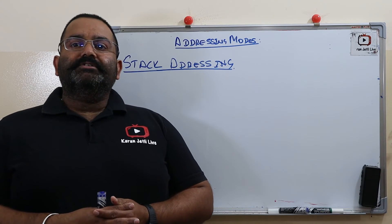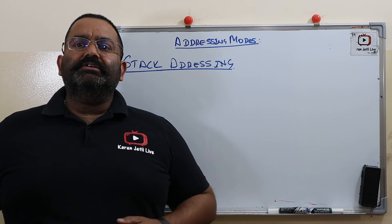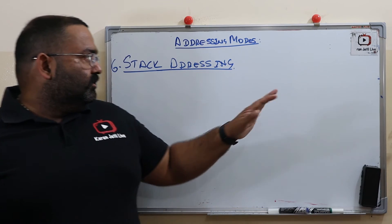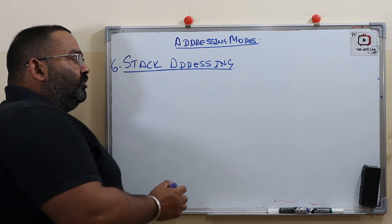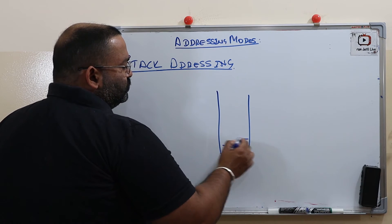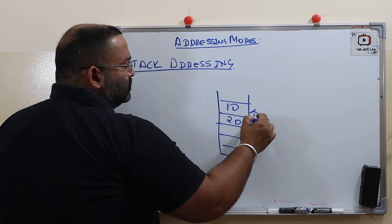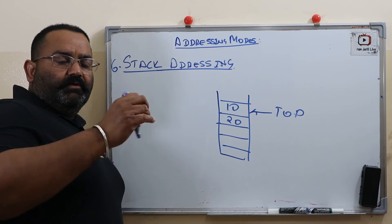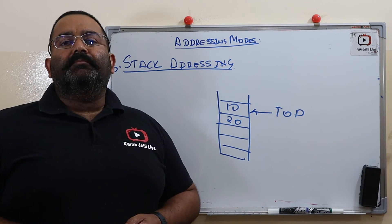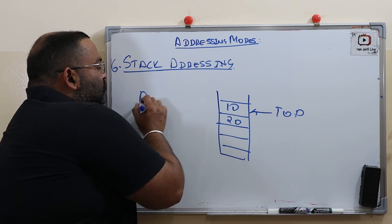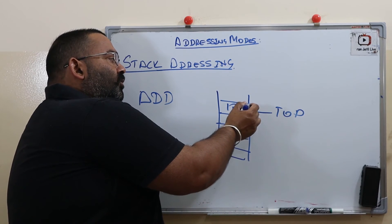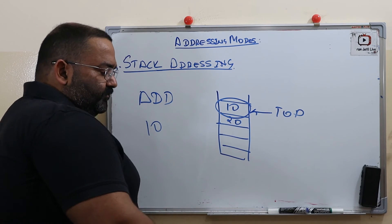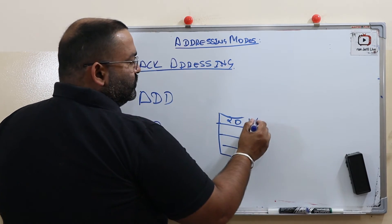The last type of addressing is stack addressing. In stack addressing, your data or operands are stored on the top of the stack. For an ADD instruction, you pop the top element from the stack — for example, you pop 10 — then the new top becomes the next element.